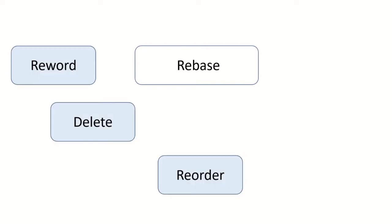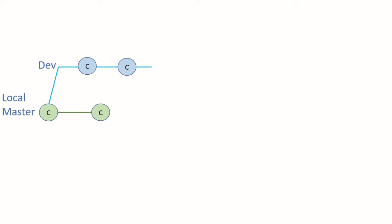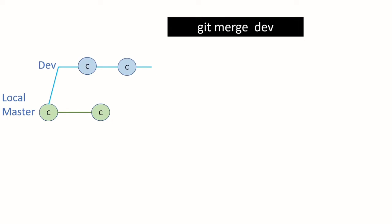By using the reword, delete, reorder, squash, and split commands. First, let's see the difference between rebase and merge. Here we have two branches: master branch and the dev branch, and now I want to merge these two chains from the dev branch into my master branch. I'm going to run git merge — I showed you this command in the previous video. What this does is bring all the dev branch changes and combine them into one merge commit, a new commit, and put the merge commit into my master branch like this. The advantage of using merge is the hash ID will not change — they will remain the same.